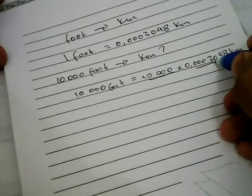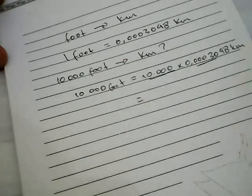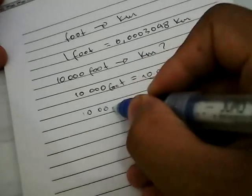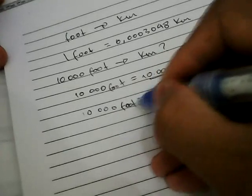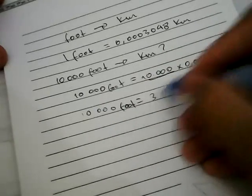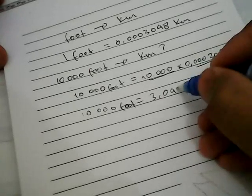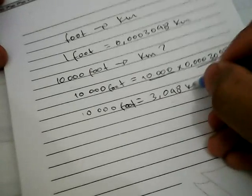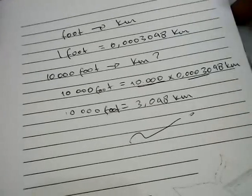So the result when we convert 10,000 feet to kilometers is 3.048 kilometers. That's the result of our calculation for the conversion between feet and kilometers.